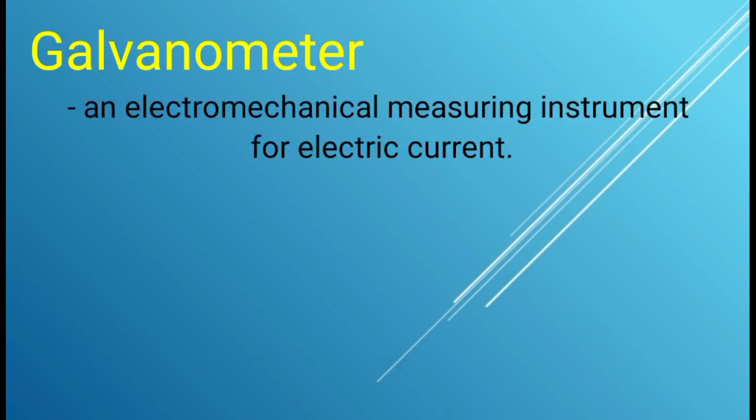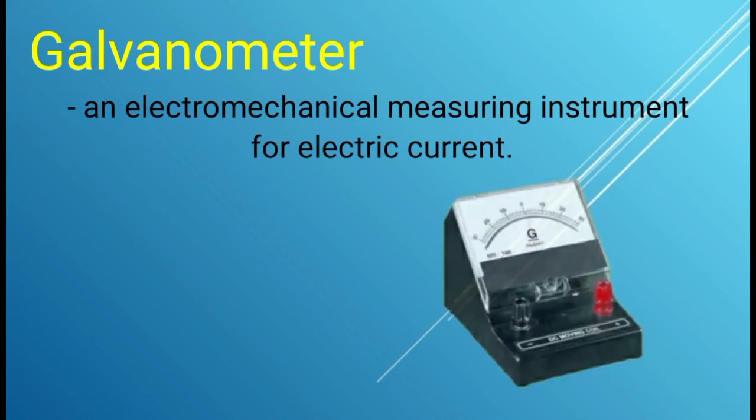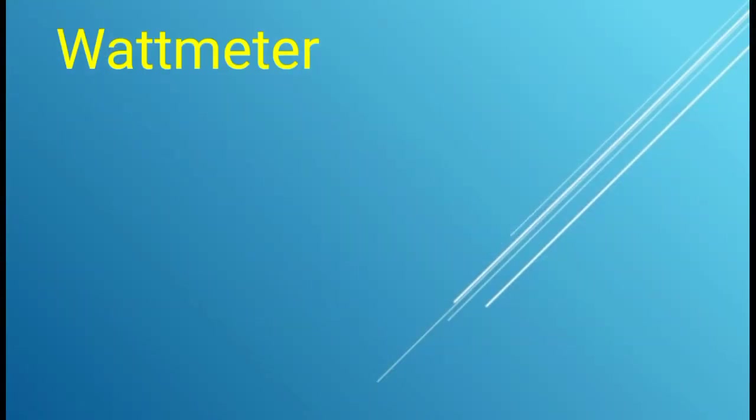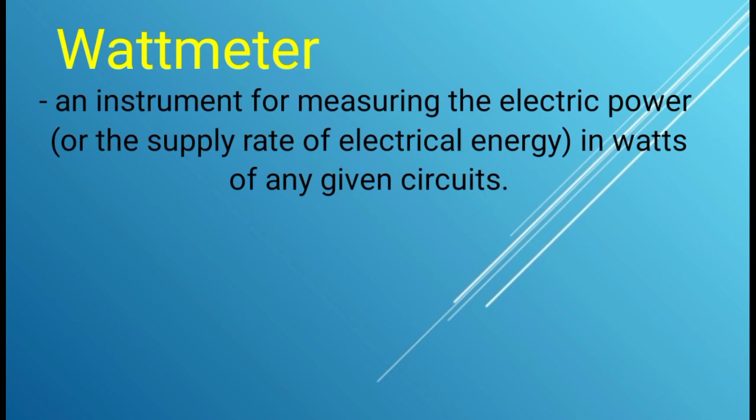Next, we have the galvanometer wattmeter. It is an electromechanical measuring instrument for electric current. And this is the sample picture and the symbol. Wattmeter is an instrument for measuring the electric power or the supply rate of electrical energy in watts of any given circuit.